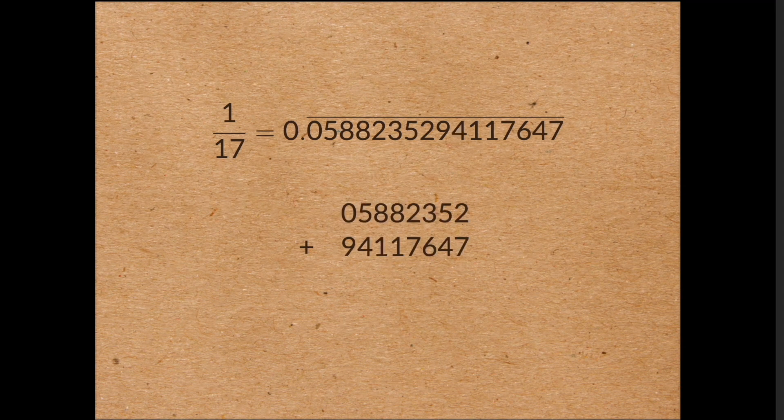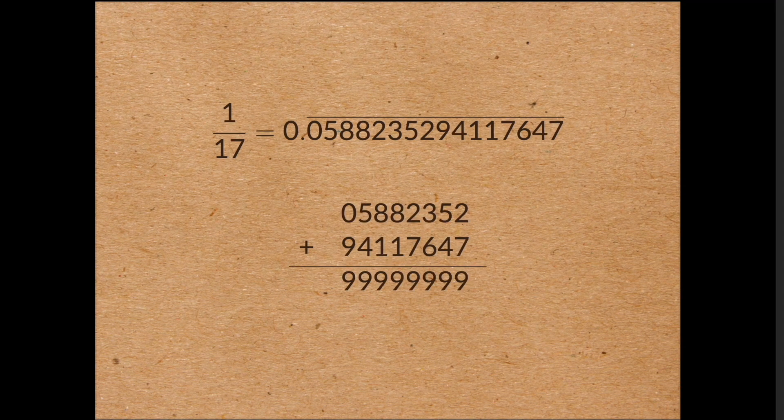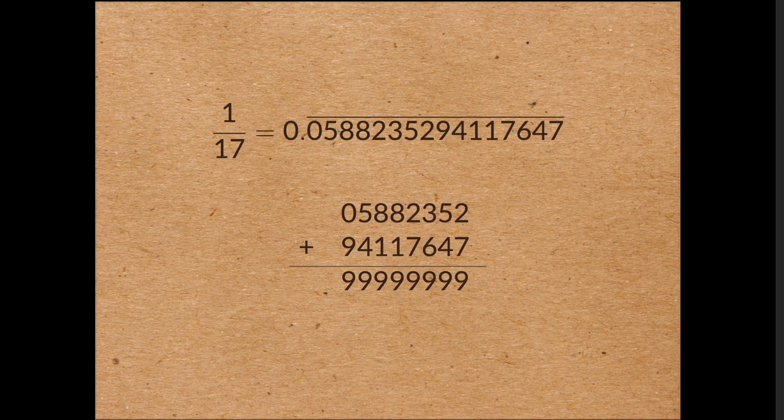So how often is the period even? It turns out that two-thirds of all prime numbers have even period. And this implies that two-thirds of the time, the average digit of 1 on p is exactly 4.5. So that's the most likely outcome.